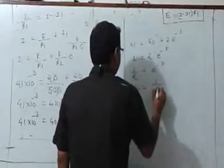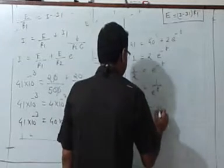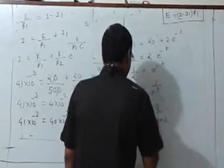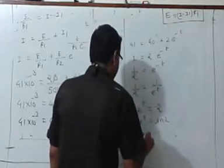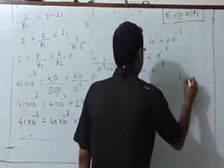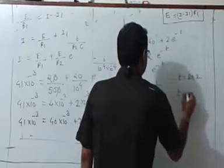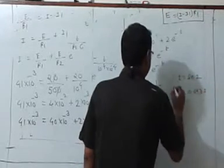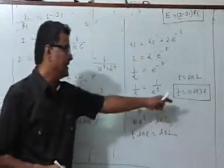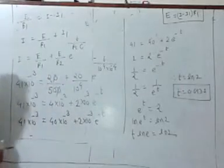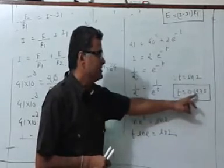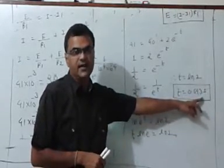Since e raised to minus t equals 1 upon e raised to t, taking log on both sides: t times ln(e) equals ln(2). Since ln(e) is 1, the final answer is t equals ln 2, which is 0.693 seconds. So the current in the main line becomes 41 mA after 0.693 seconds, just after the switch has been closed.